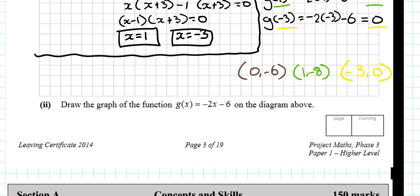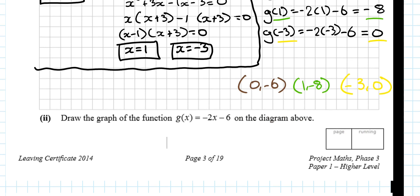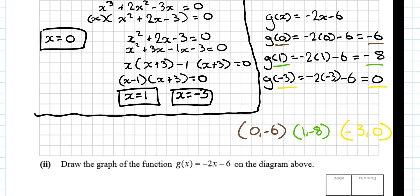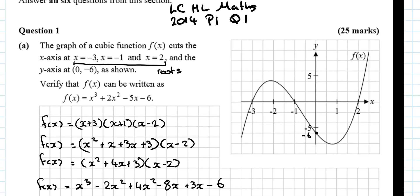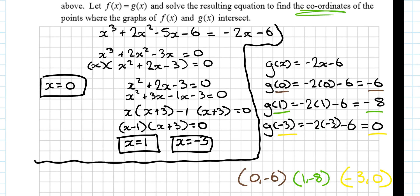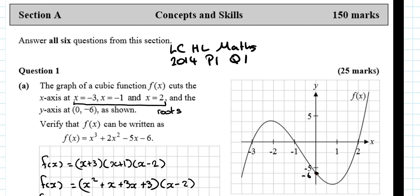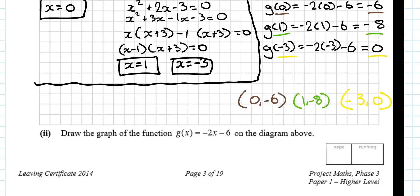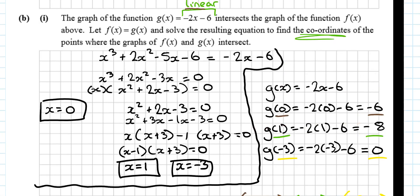Draw the graph of the function on the diagram. Well, normally, we would find two points. So, a point on g(x) and then another point on g(x), and you do that by just subbing in any x values we want. We've already found certain points. 0 minus 6, minus 3, 0. 0 minus 6. minus 3, 0. Minus 3, 0. Minus 3, 0 is over here.